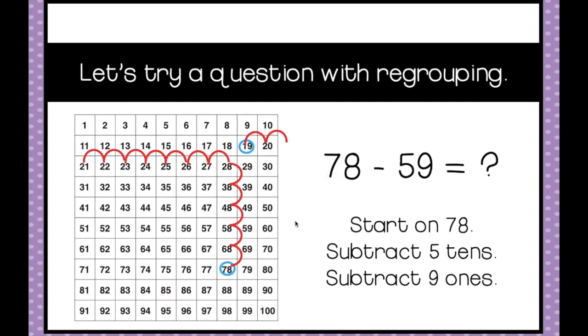Let's try a question with regrouping. I love the hundreds chart for regrouping. It makes regrouping really simple. So in this question, 78 minus 59, we're going to start on the 78 and we are going to subtract the 5 tens. 1, 2, 3, 4, 5. Here we are on 28.